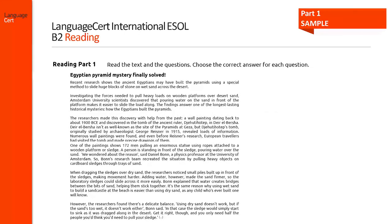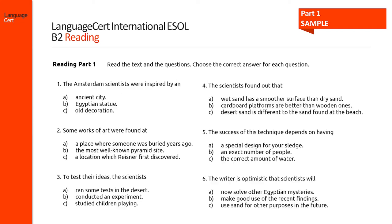This sample text is taken from Part 1, where candidates are asked to read a text which might originate from a news story, an article, a review or a proposal. They need to answer six multiple-choice questions about it. Here are its six multiple-choice questions on the text, each providing three options to the candidates.